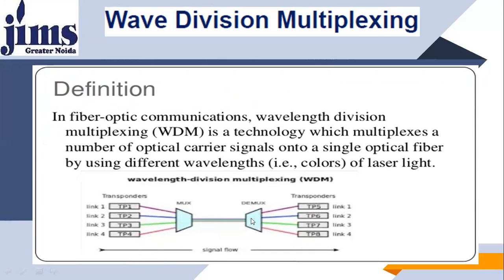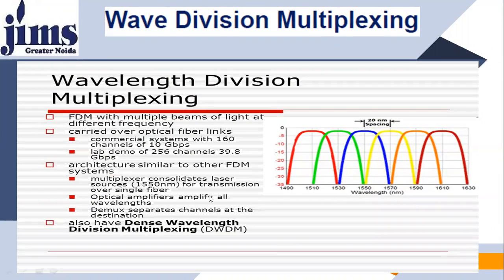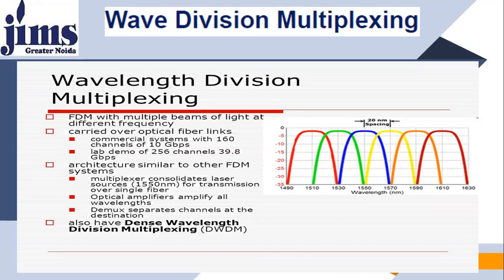The demultiplexer receives all frequencies simultaneously and separates them respectively: Lambda 1 goes to link one, Lambda 2 to two, Lambda 3 to three, Lambda 4 to four. WDM is essentially FDM with multiple beams of light at different frequencies carried over an optical fiber link. Commercial systems support 160 channels at 10 Gbps. The architecture is similar to other FDM systems, with laser sources, 1550 nm transmission over single fiber, and optical amplifiers amplifying all wavelengths. The demultiplexer separates channels at the destination. This is also called Dense Wavelength Division Multiplexing, or DWDM.